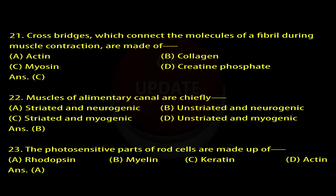Question 22: Muscles of alimentary canal are chiefly. A. Striated and neurogenic. B. Unstriated and neurogenic. C. Striated and myogenic. D. Unstriated and myogenic. Answer: B.